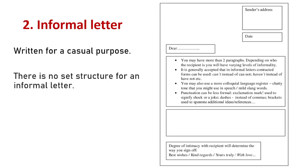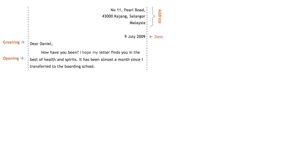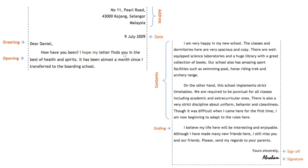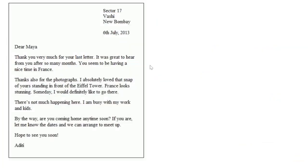Here's a real example. The sender's address is Number 11 Polo Road, 43000 Kajang, Selangor, Malaysia, dated 9 July 2009. The greeting is 'Dear Daniel,' and the opening reads: 'How have you been? I hope my letter finds you in the best of health and spirit.' The content is very personal — 'I'm very happy in my new school. On the other hand, this school implements strict timetables.' The ending — 'I believe my life here will be interesting' — and the sign-off show the personal nature between friends sharing experiences.